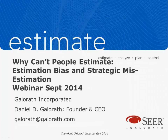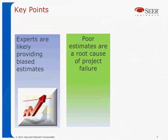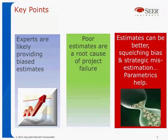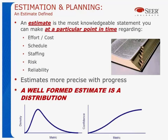Good morning everybody. It's my privilege to be here today to talk about estimation. I've been studying estimation for over 30 years now, and I've watched through time as people misestimated — sometimes intentionally, many times accidentally, sometimes because they had no better idea, and sometimes just because they hoped they could do things. We're going to talk today about three key points. First, experts are likely to provide biased estimates. Poor estimates are a root cause of program failure, and estimates can be better by squelching bias and strategic misestimation — and parametric models can help. We're going to talk mostly about the estimation processes, but we'll talk about parametrics slightly.